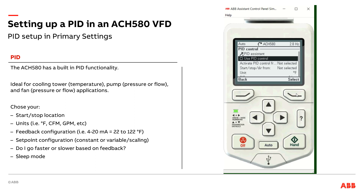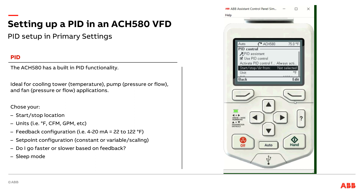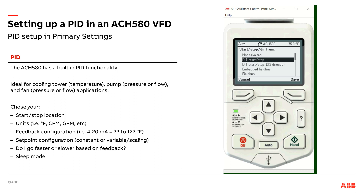First thing I'm going to do is say yes, I want to use PID control. It is always active. So my first main decision here is where's my start/stop and, if applicable, my direction command — say if I have de-ice mode for a cooling tower in a northern climate. I'm going to say my start/stop is on digital input 1. I don't need to reverse, but if I wanted reversing on digital input 2, I could have selected that second option. So digital input 1 is my start/stop.